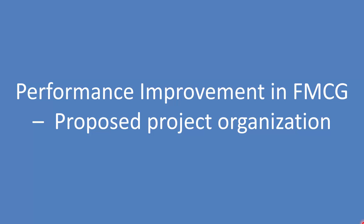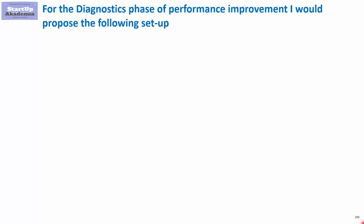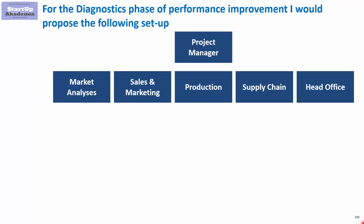Performance improvement in FMCG — proposed project organization. Let's see how I recommend organizing the team for the first phase of the performance improvement project, being the diagnostics. I would recommend having a project manager and then the following number of streams, up to five.